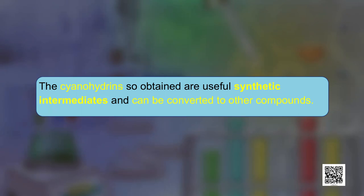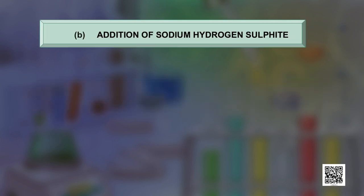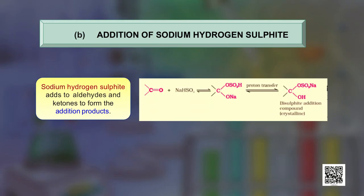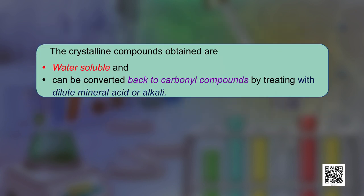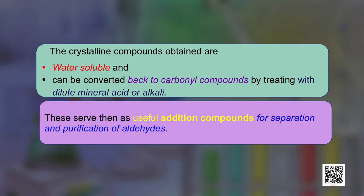The second reaction is addition of sodium hydrogen sulfite (NaHSO₃). Sodium hydrogen sulfite reacts with aldehydes and ketones to form crystalline, water-soluble addition products. These can be converted back to the original carbonyl compounds by treating with dilute mineral acid or alkali. This serves as a useful purification tool for aldehydes and ketones.